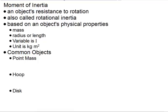An object's moment of inertia is based on its physical properties. It's directly related to its mass and directly related to its radius or length. We measure with the variable I, and the unit is kilograms meters squared.